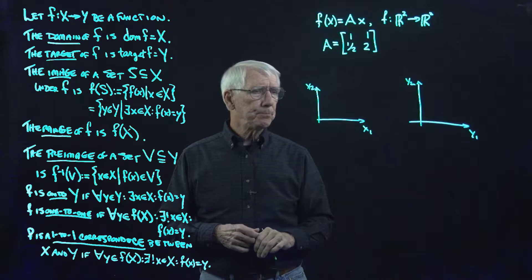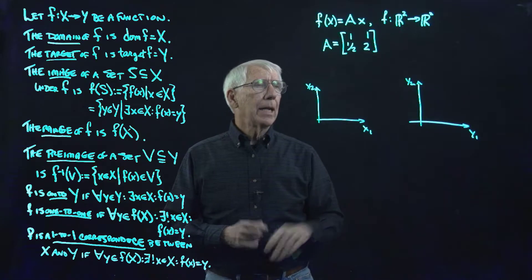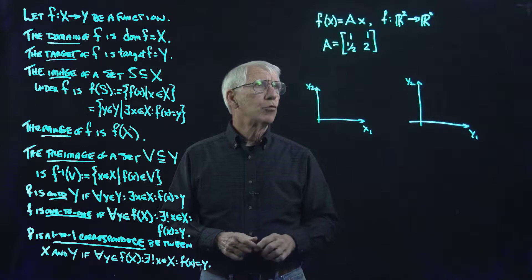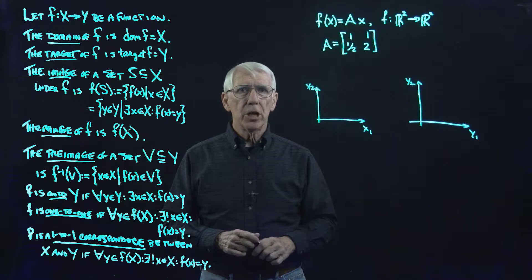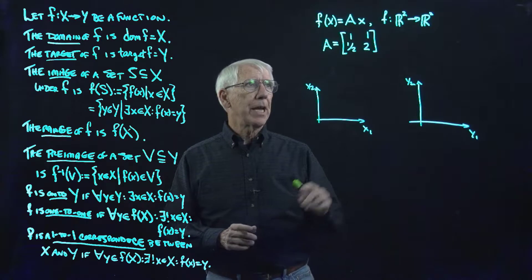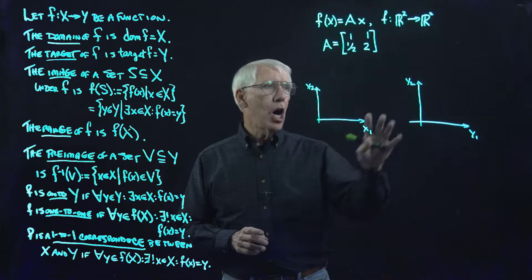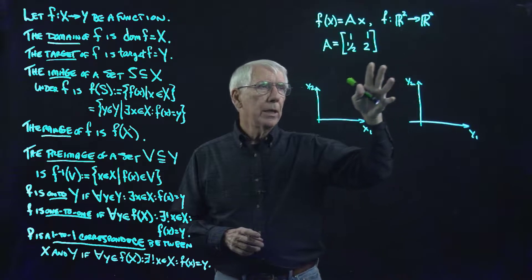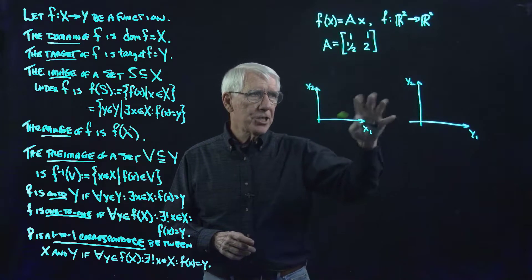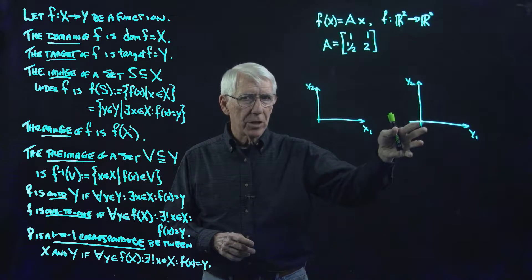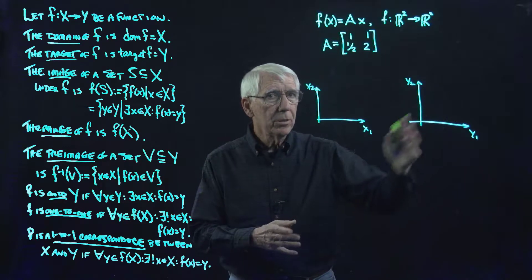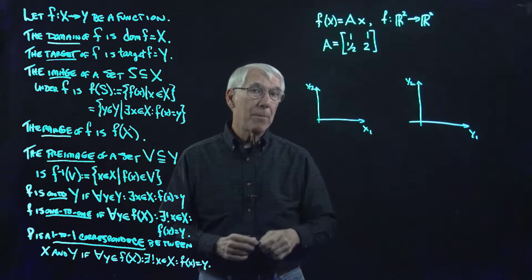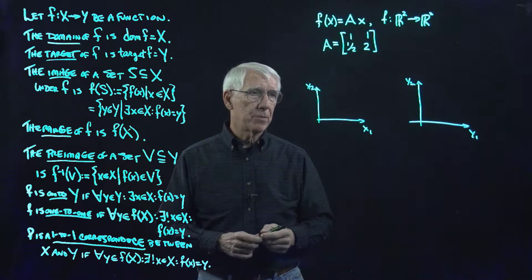Let's put our domain down here — this is X1 and this is X2 — and let's put the target space over here. Let's call it Y1 and Y2, so that F of x equals y. Let's first ask: what is the range of F? Does F map onto all of ℝ² or does F just map into some subset of ℝ²?